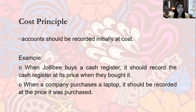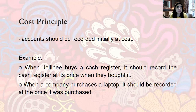Next is the Cost Principle: accounts should be recorded initially at cost — the price at which you acquired them. For example, when Jollibee buys a cash register, it should record the cash register at the price it was purchased. If the cash register was bought in January for 50,000 pesos and its price has since risen to 60,000 pesos, you still record it at 50,000 — the original cost at acquisition.